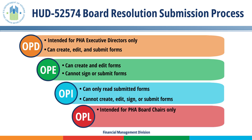The OPE user role is intended for a PHA's Board Chair only. This user can create, edit, and electronically submit the form HUD-52574. Please note: only if the Board Chair provides a wet signature for the form HUD-52574, then the PHA's Executive Director must submit the form.